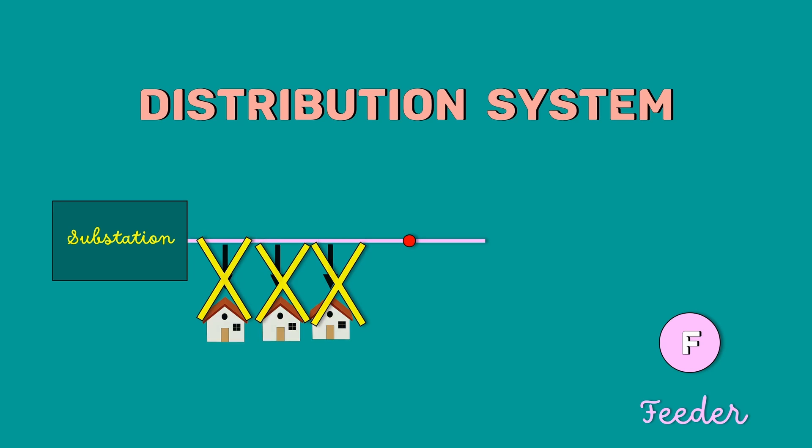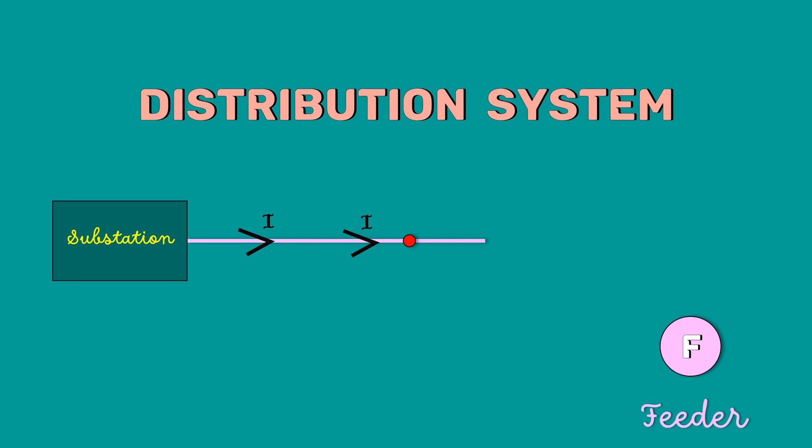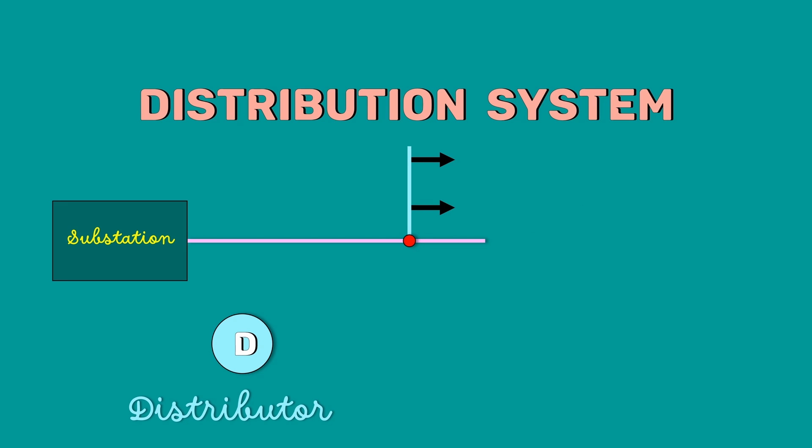The distribution system mainly consists of feeders and distributors. A feeder is a conductor which connects the substation to the area where the power is to be distributed. Generally, no tappings are taken from the feeder so that the current in it remains the same throughout. A distributor is a conductor from which tappings are taken for supply to consumers. So basically, the distribution system is the connection of these feeders, distributors and substation.